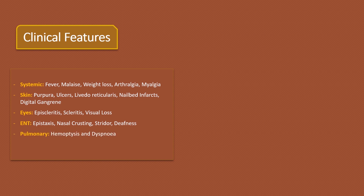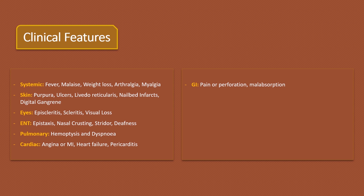If there is pulmonary hemorrhage, the patient may present with hemoptysis and dyspnea. Cardiac involvement may lead to angina or MI. Acute involvement of coronary arteries may also lead to heart failure and pericarditis. Acute ischemia of the gastrointestinal tract may lead to pain or perforation of a viscus, and in chronic ischemia, it may lead to malabsorption.